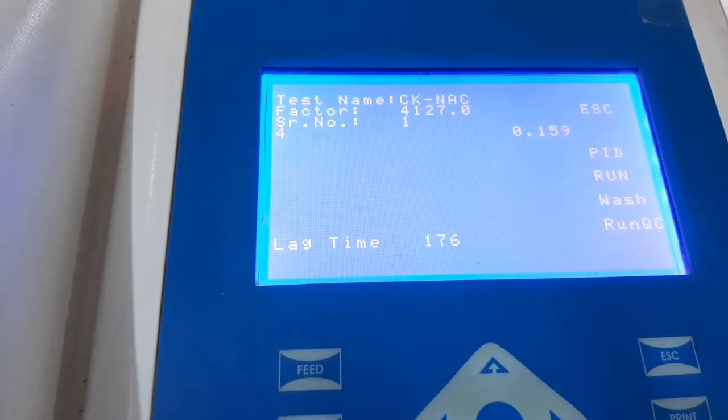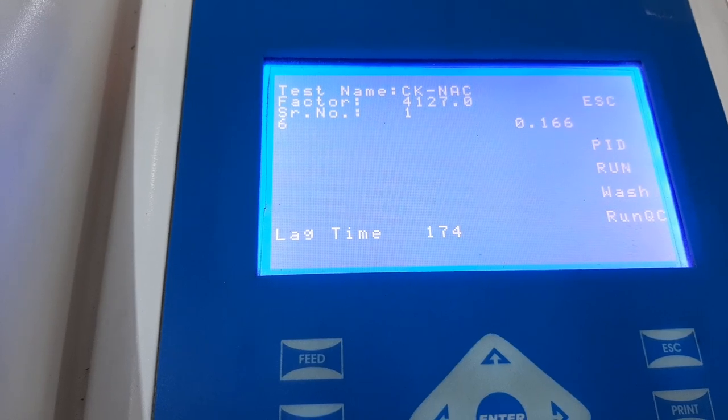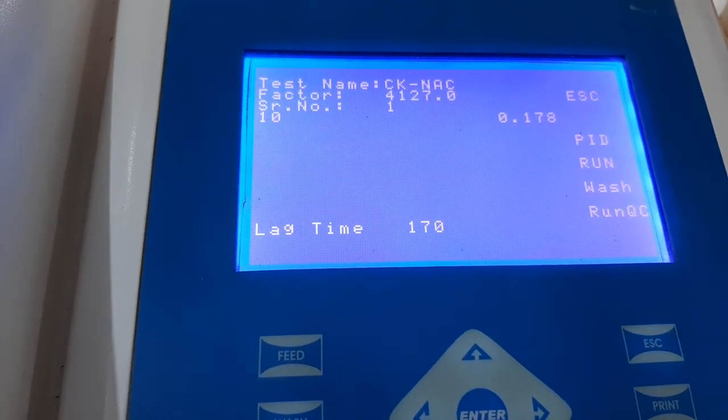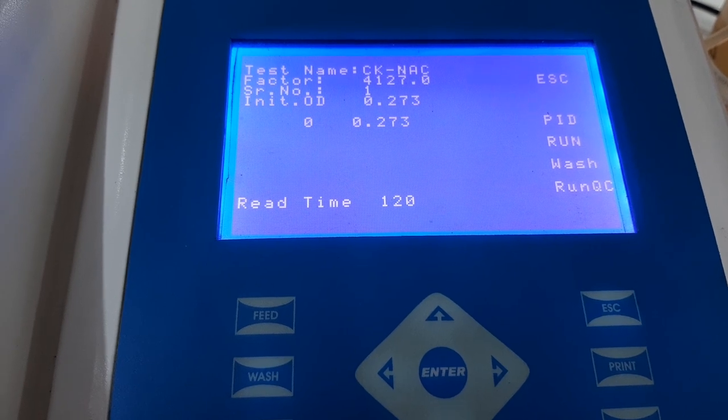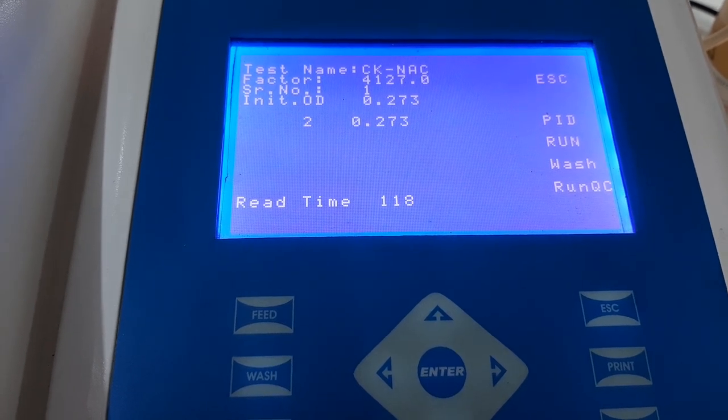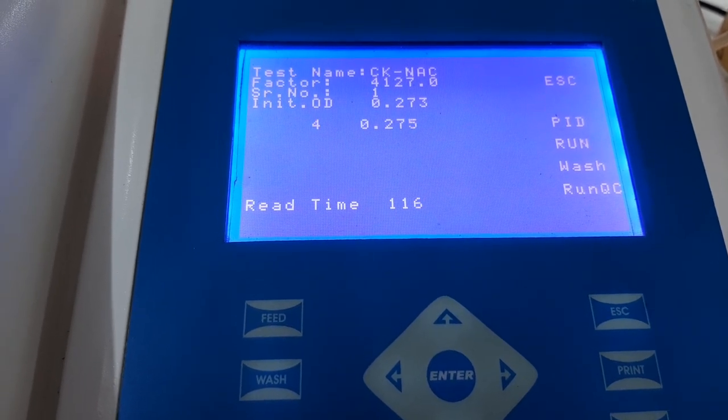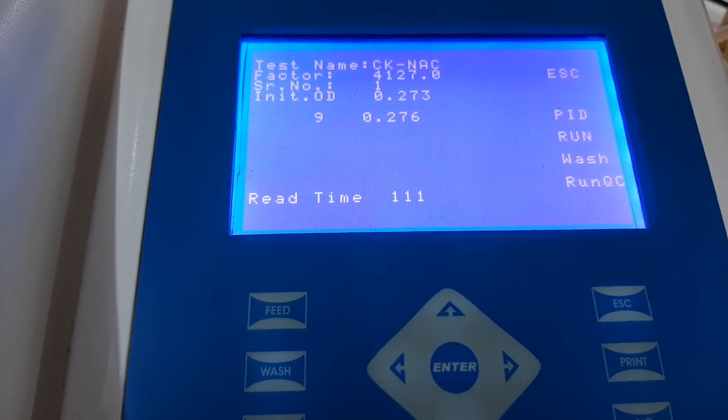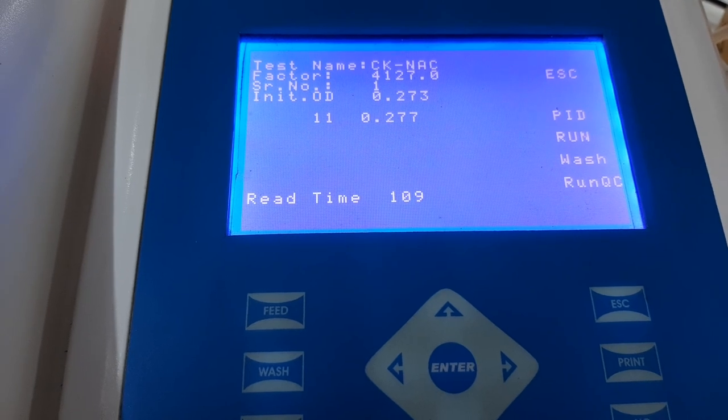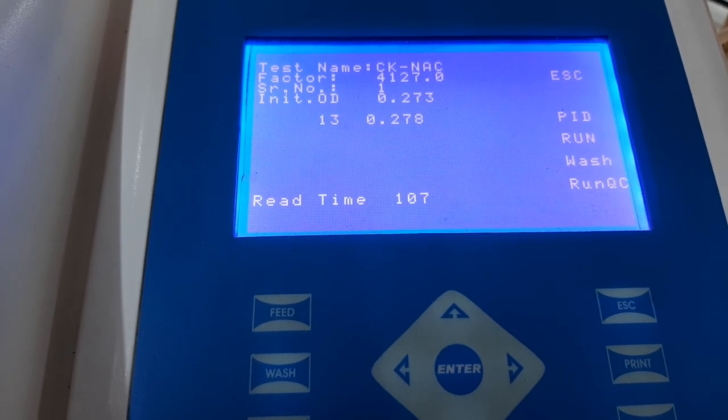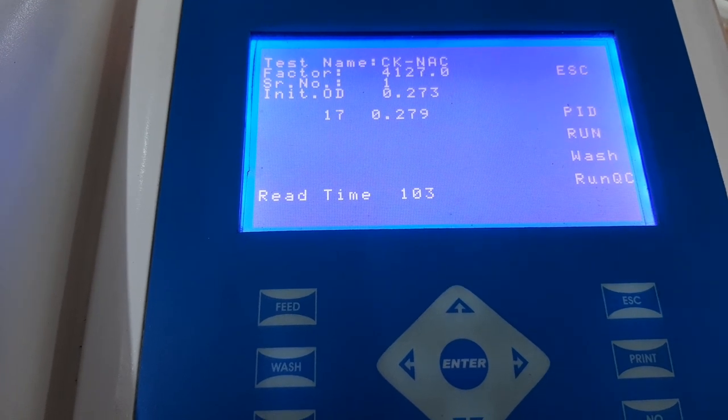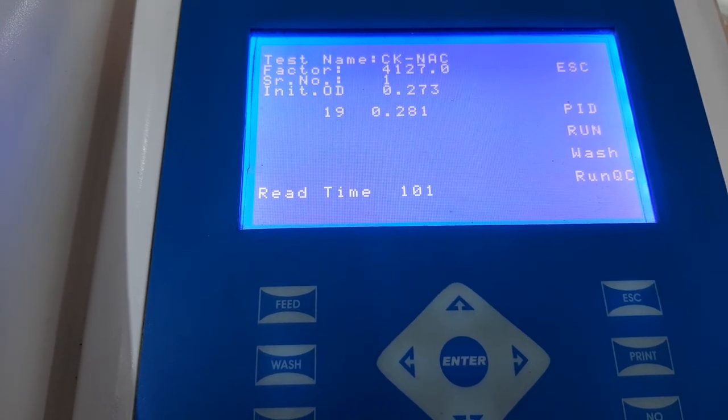Now as you can see, the lag time has already been started as per the program which is already pre-set. Once the lag time is over, automatically the read time will initiate. As you can see, the machine has already displayed the initial absorbance. Now in this case, the initial absorbance is less than 0.7 which is as per the specification by the manufacturer. Hence it can be concluded that the reagent is working fine.